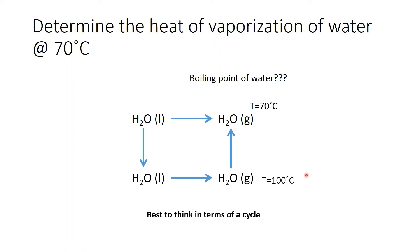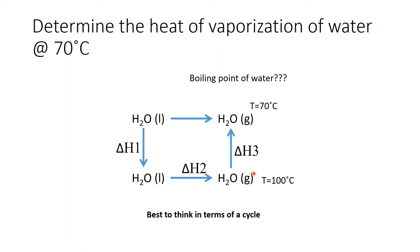It's best to think of things in terms of a cycle. Water is going to evaporate, but mathematically we're going to first take water to the boiling point, which is 100 degrees C. We then incorporate the heat of vaporization, which is on the thermodynamic table. Then we have to cool the gaseous water from 100 degrees C to 70 degrees C. So we think of that as a cycle and we have three delta H's to consider. Delta H1 is sensible heat, delta H2 is the heat of vaporization taken right off the table, and delta H3 is cooling gaseous water from 100 degrees C to 70 degrees C.